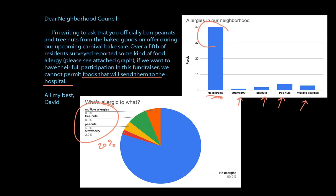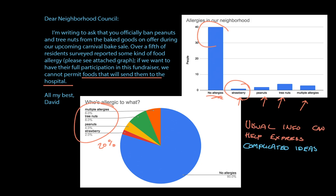And something that's in the graph but isn't in the letter is the breakdown of allergies by type. Maybe the council could decide that the one person with a strawberry allergy is an acceptable risk, and that strawberry baked goods are kind of obvious-looking and easy to avoid in a way that brownies with walnuts in them aren't. This visual information allows the neighborhood council to get my point more efficiently than just the words alone.